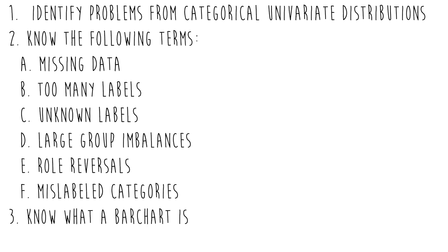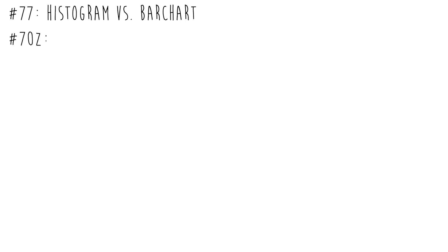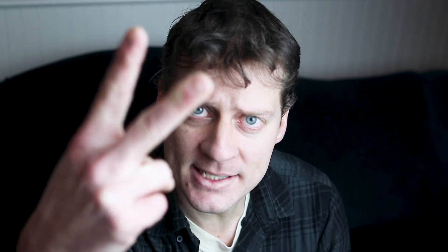Number three: understand what a bar chart is. Number 77: understand the difference between a histogram and a bar chart. And learning objective number 100: know that you are awesome. Peace out.